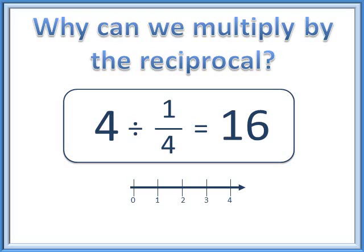In this problem we're dividing four divided by one-fourth — seeing how many times you can take away one-fourth. For each whole, you can take away one-fourth four times. There are four wholes, so for each whole you can take away four times — really you're finding four times four. Four parts times four will give you 16 parts. That's why we can multiply by the reciprocal.